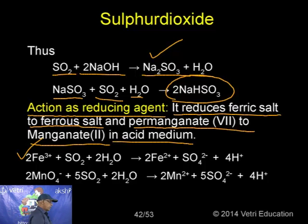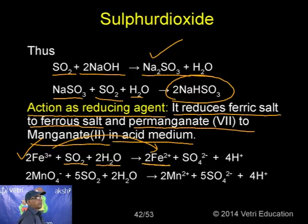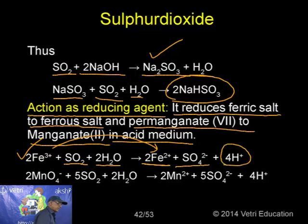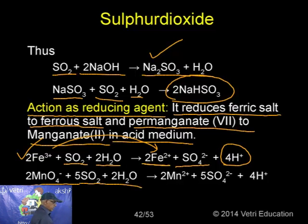The S₈ molecules are packed in different crystal structures — either crown shape or chair form. At elevated temperatures, S₂ is the dominant species, similar to O₂. S₃ is also available at elevated temperatures but not at ordinary temperature — this has been proved experimentally.